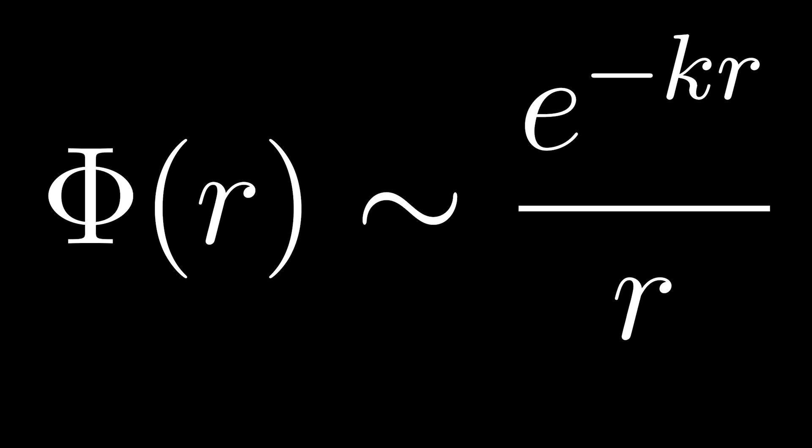So therefore, at short range, where this kr, which is the part of the exponent of the e, is very small, the exponential term is just one, and the potential becomes an inverse r potential, which then translates to an inverse square force law.